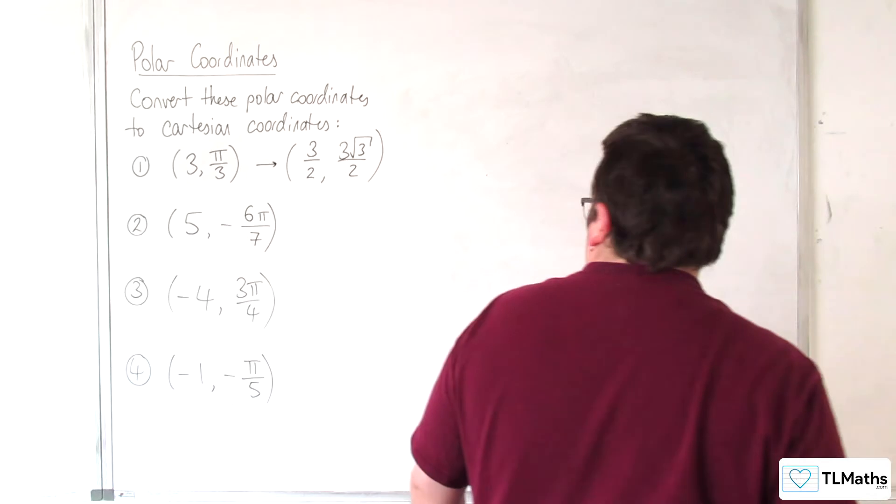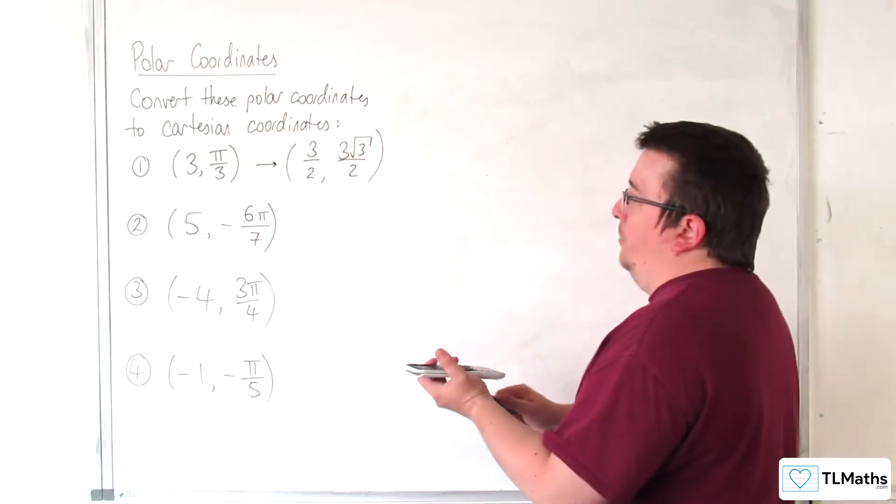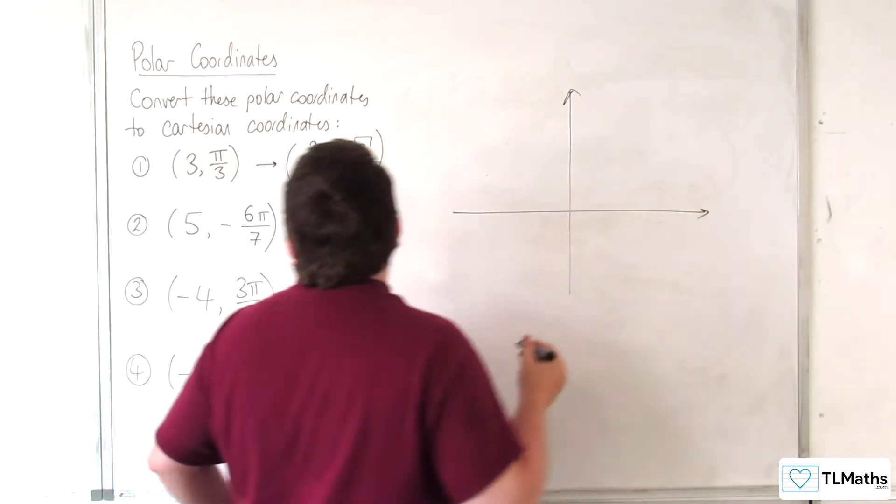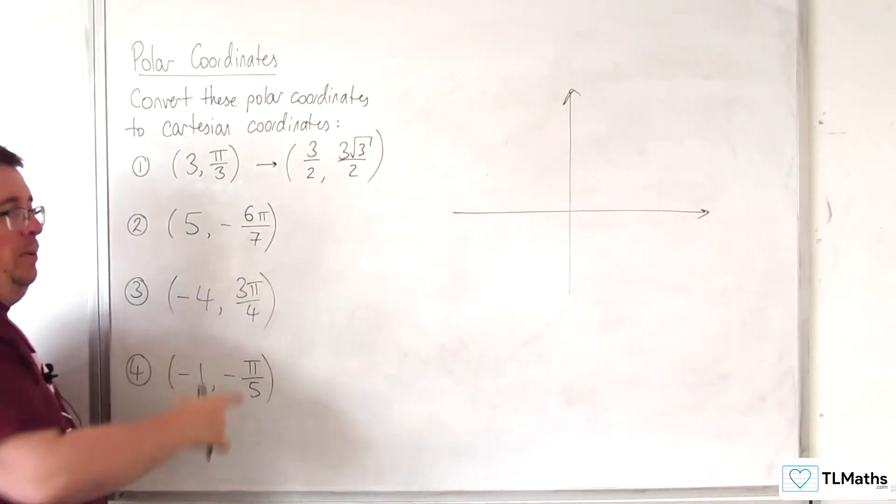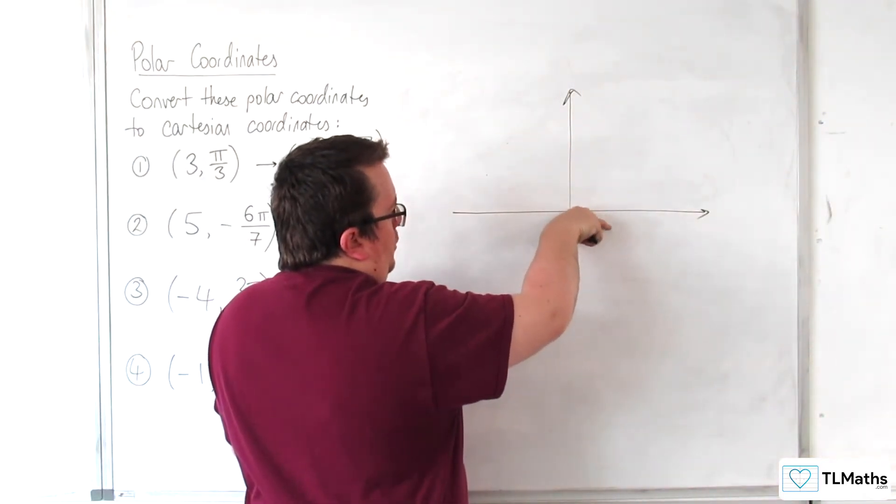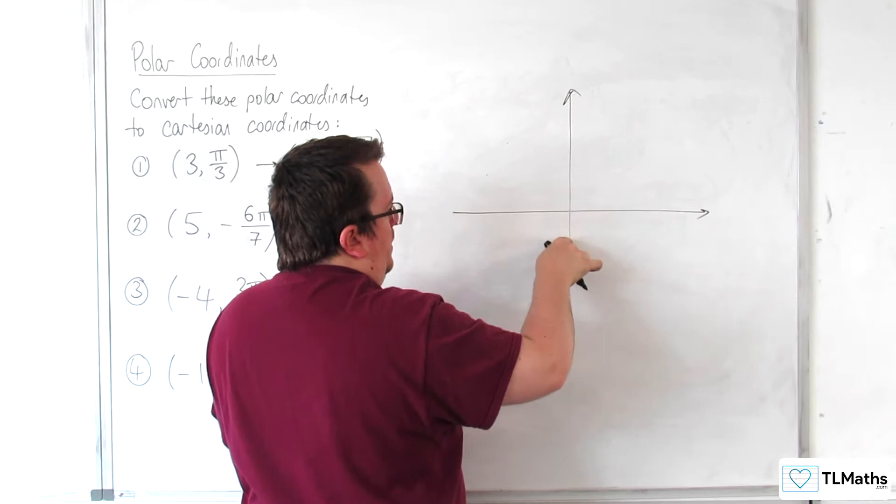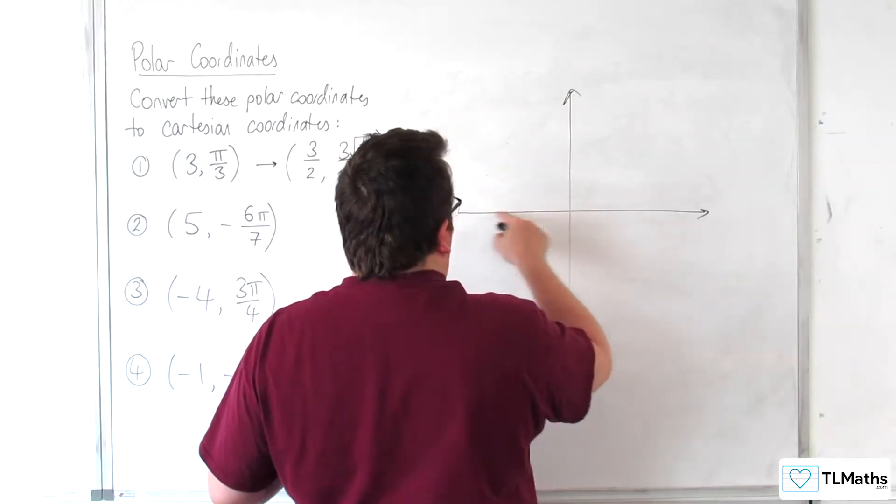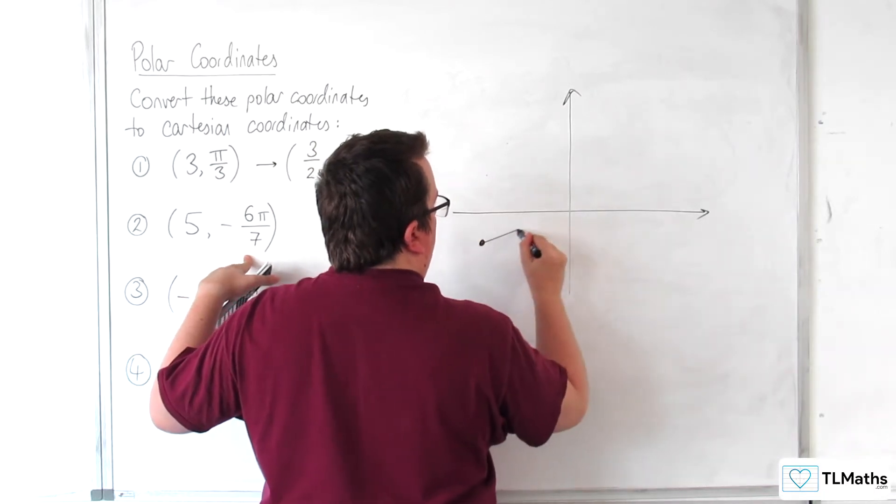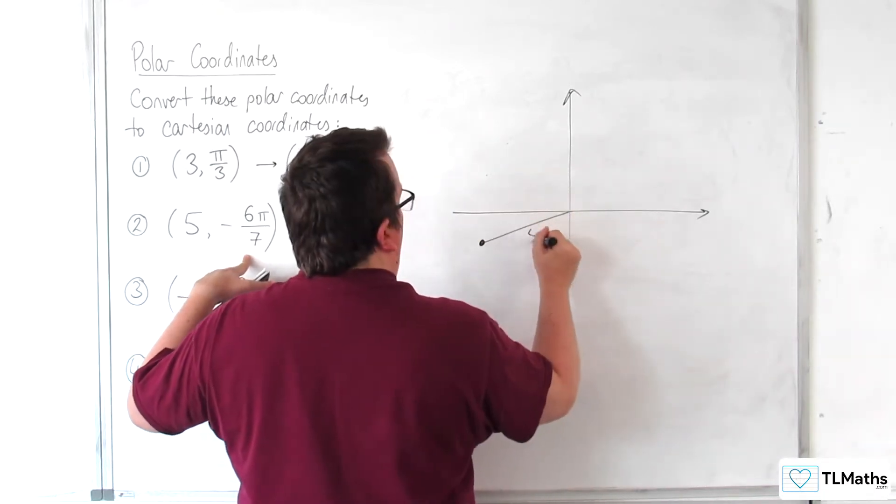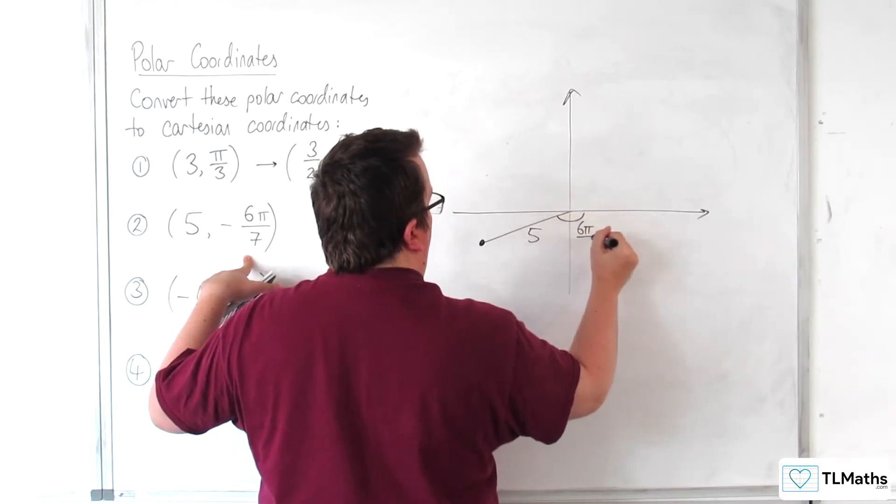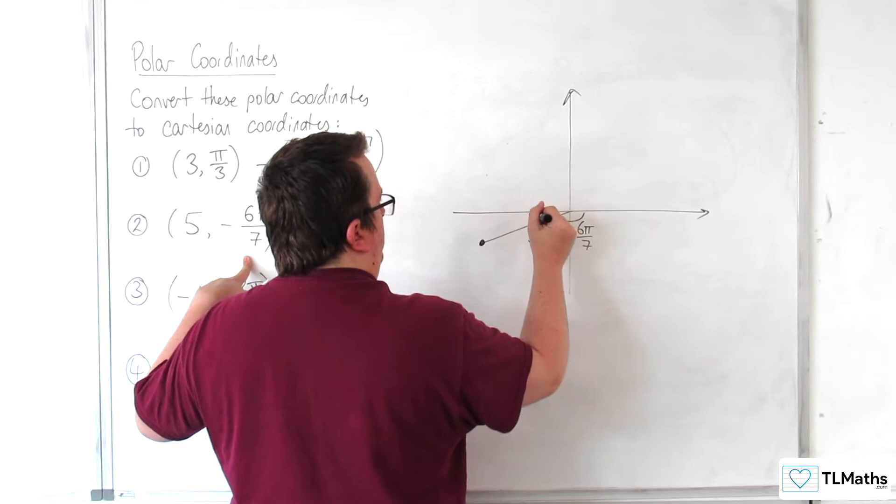Okay, let's take a look at the second one, 5 minus 6 pi over 7. Okay, so, minus 6 pi over 7. So, that's going down clockwise. So, that's pi over 2, this would be pi, so we're going to be somewhere over here where that distance is 5. This is 6 pi over 7, so that means that that is pi over 7.